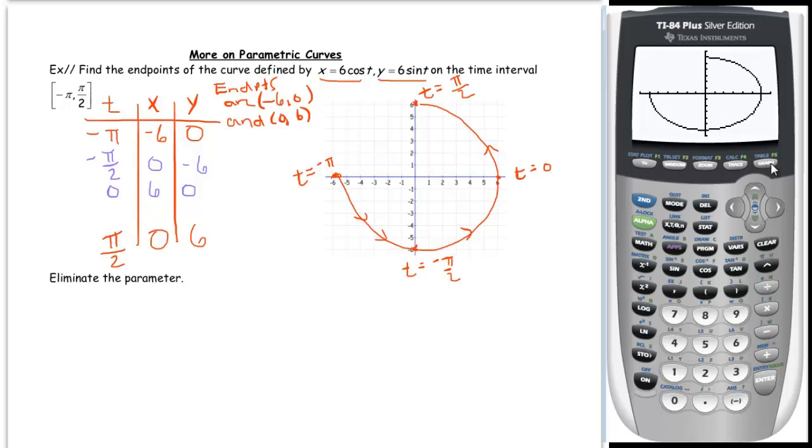How can we get the full circle? Well what we could do is change our tmax. Rather than go from negative pi to pi over 2, let's make it go from negative pi to pi. So let's make our tmax pi. Let me hit graph. And sure enough, we get the whole circle.